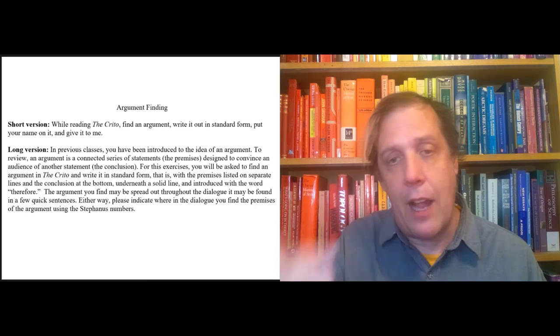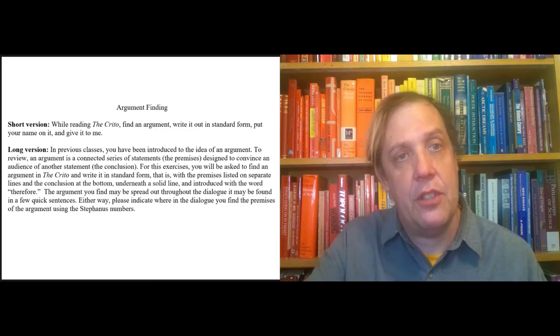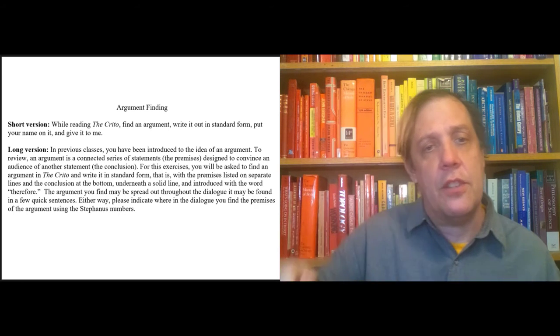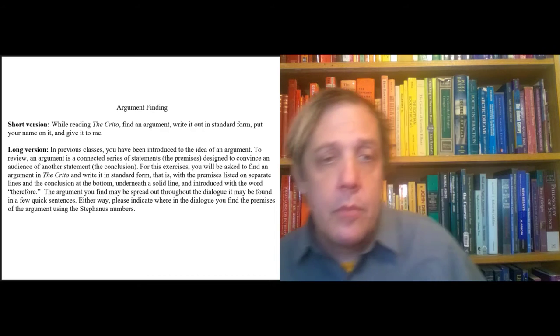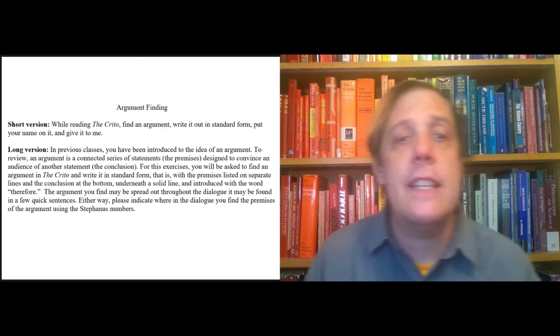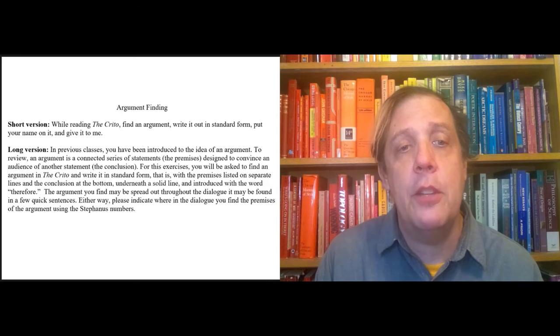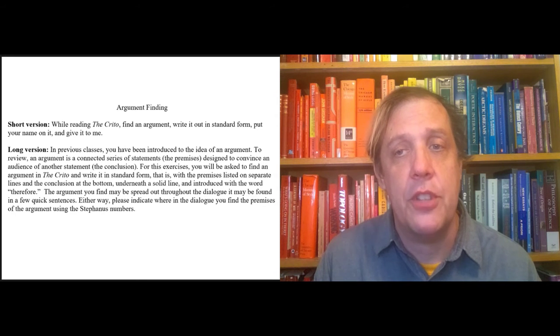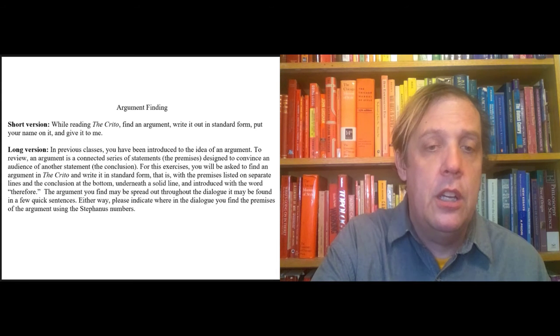Now the argument you find may be spread out throughout the dialogue, like the person may be gradually introducing premises until finally they get to the conclusion, or it may just be a few quick sentences they give right away. Either way, please indicate where in the dialogue you find the premises using the marginal numbers on the side, the Stephanas numbers that we've been using all along.